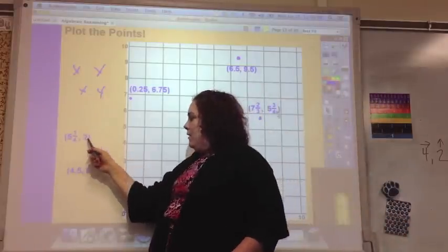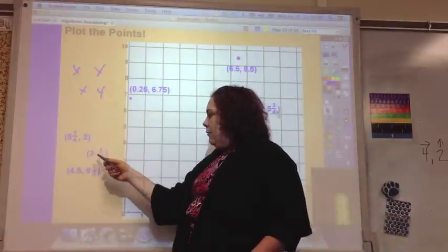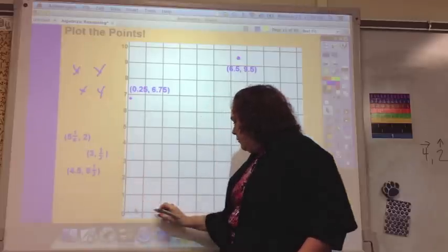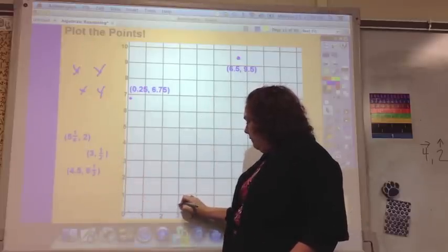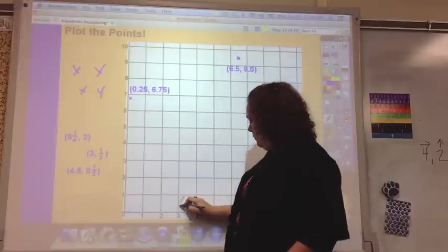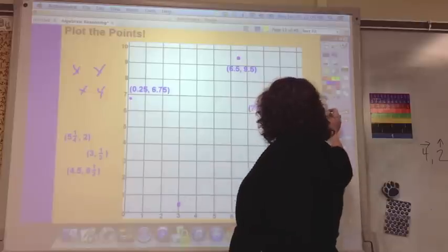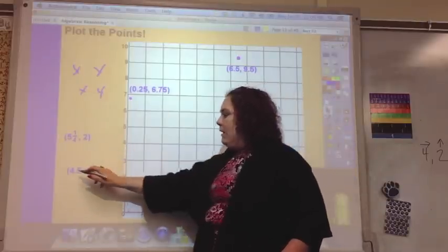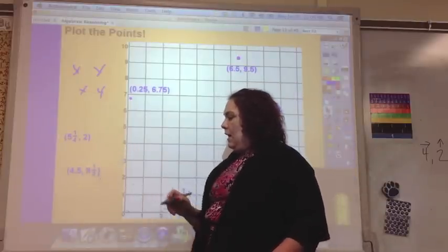So, you're getting the idea. One-fourth is close to five, and then two wholes. And then three, and then one-half. So, three up one-half. And then 4.5 is 4 and a half to 8 and a half.